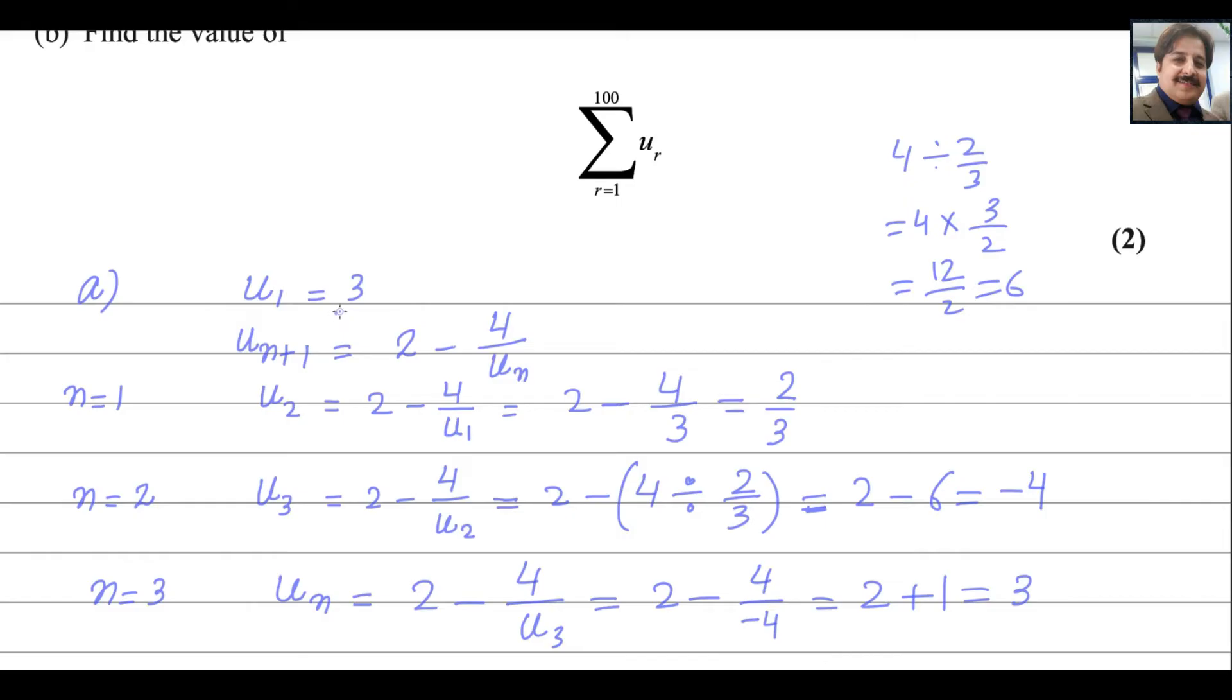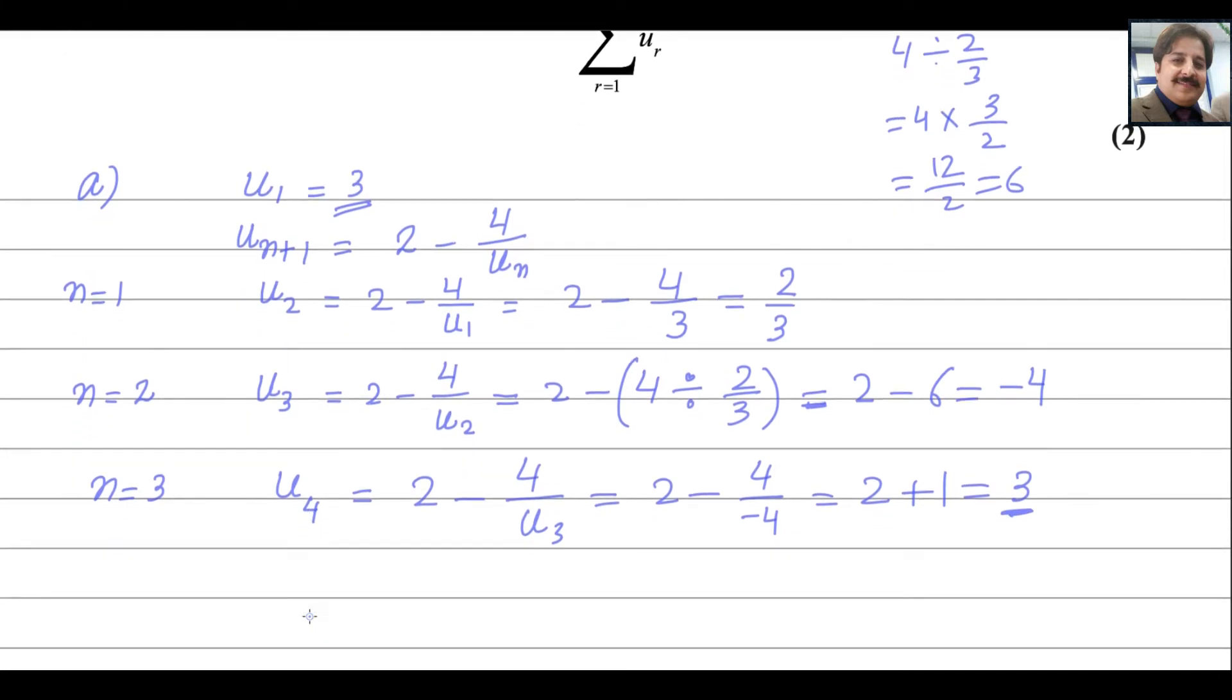If you notice that it starts with 3, the fourth term is 3 again. We got the answers for U1, U2, U3 and U4, and U4 is the same like U1. If you go for U5 for sure, it will be the next number 2 over 3, then negative 4, then again 3. So it is a periodic series. Sometimes in some questions, people are asking you is that periodic or not? You can say it is periodic because it will start again the same number of terms after every 3 terms. This is the answer for first part.